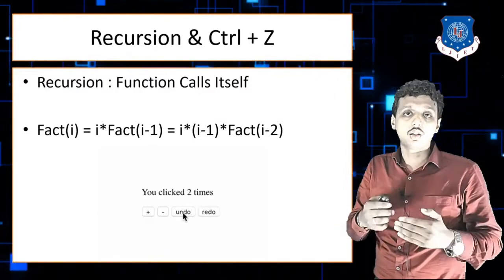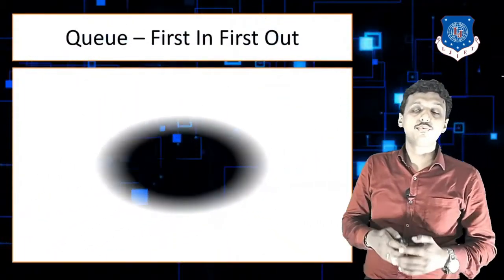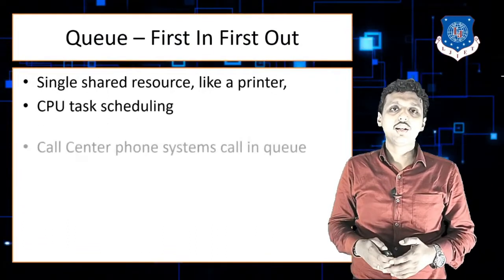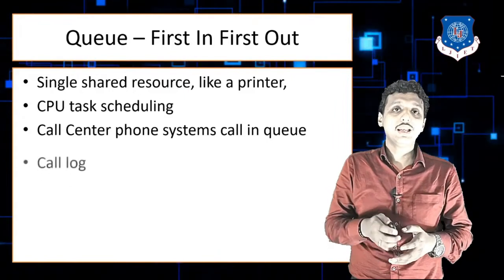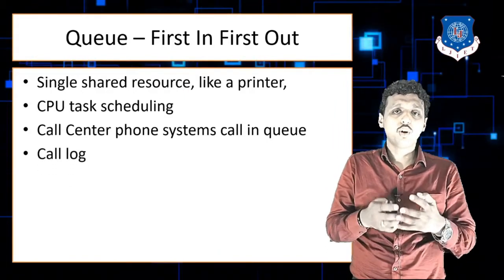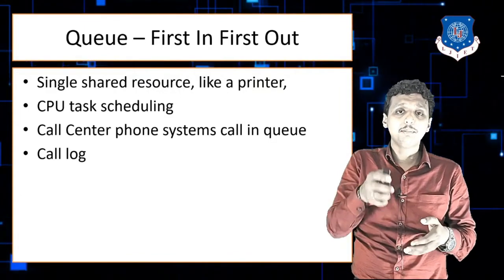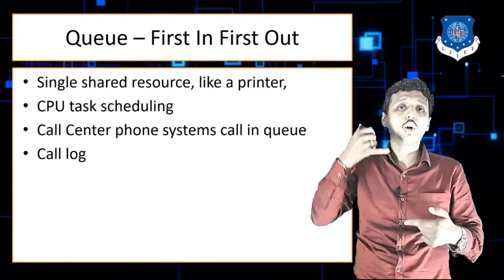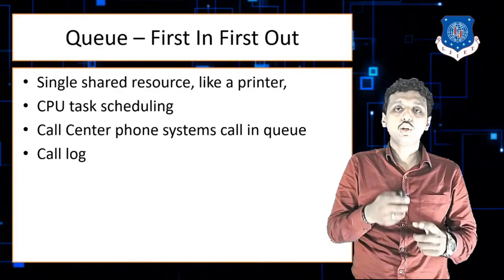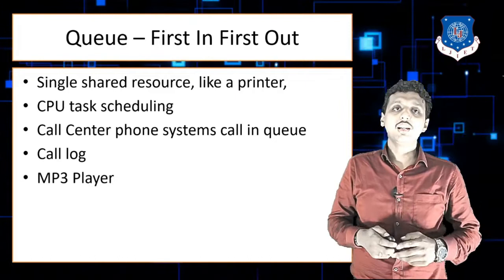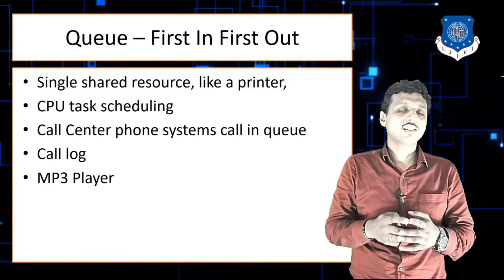The next is queue. Queue follows the first-in first-out manner. Examples: a single shared printer with many computers uses a queue. CPU task scheduling uses a queue. In a call center, the person picks up the first number, calls that person, then picks up the next number in sequential manner — that's a queue. Your mobile phone call log also uses the queue data structure, and a music player playlist is the biggest example of queue.